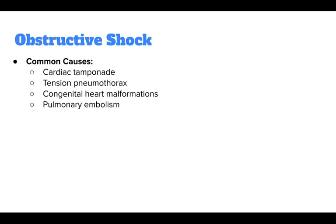Causes of obstructive shock require rapid and definitive care since they are acutely life-threatening. Cardiac tamponade requires pericardial drainage. Tension pneumothorax requires needle decompression and subsequent placement of a chest tube. Pediatric heart surgeons can address vascular abnormalities. Ductus arteriosus can be induced to remain open by administering prostaglandin E1 analogs. Pulmonary embolism care is mostly supportive, though trained personnel can administer fibrinolytic and anticoagulant agents. Management of these complex etiologies is beyond the scope of this webinar.